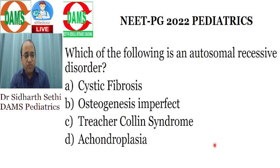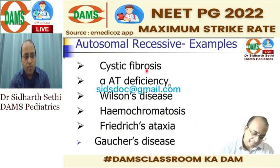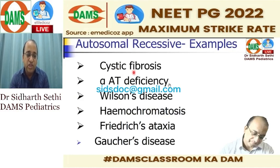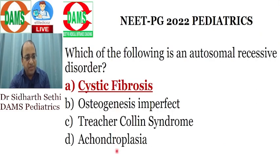There was a question on which of the following is an autosomal recessive disorder. Cystic fibrosis is autosomal recessive and is the most common lethal genetic disorder in Caucasians. Also remember alpha-1 antitrypsin deficiency, Wilson's disease, hemochromatosis, Friedreich's ataxia, and Gaucher's disease are all autosomal recessive. Osteogenesis imperfecta and the rest mentioned in the question are autosomal dominant.